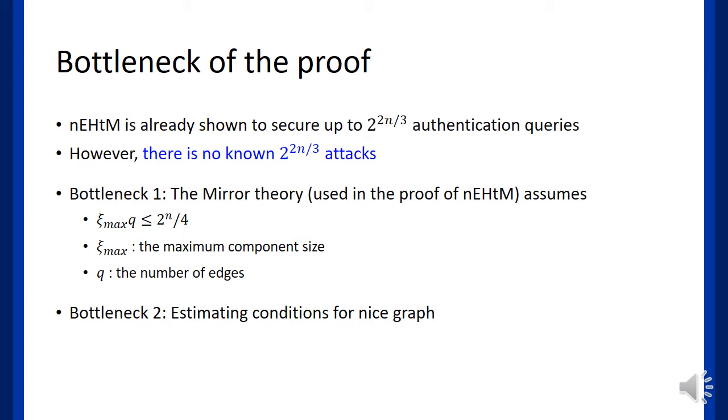The second bottleneck comes from estimating conditions for nice graphs. To attain a better security bound, we need to estimate the probability of having nice graphs more carefully than before. And sometimes, it becomes the most challenging work among our whole proof.